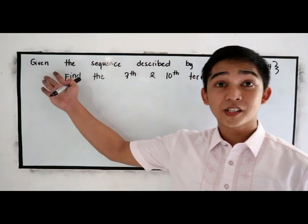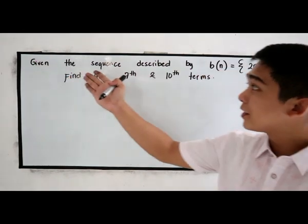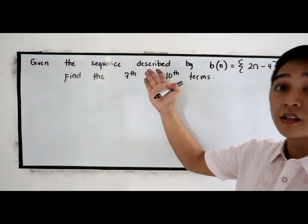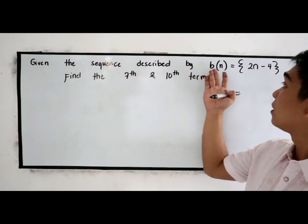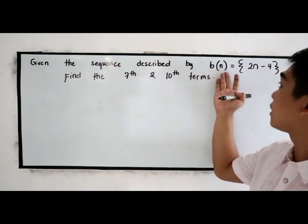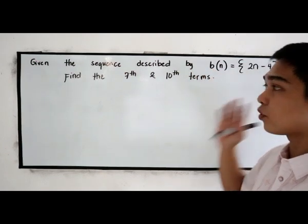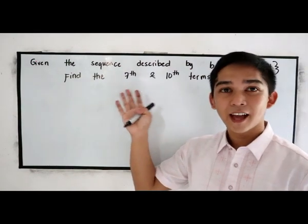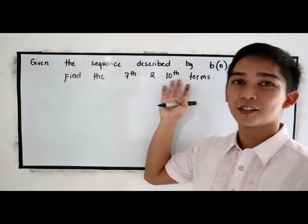And now our second example. Given the sequence described by f(n) = 2n - 4, find the seventh and the tenth term.